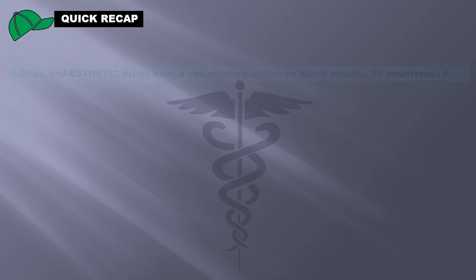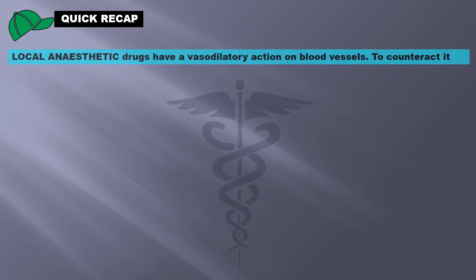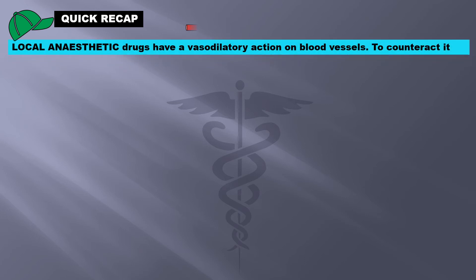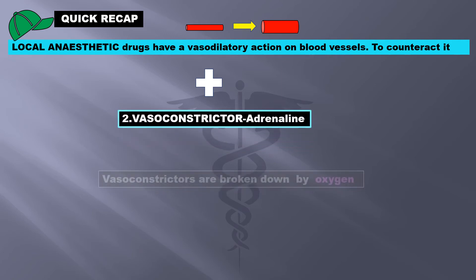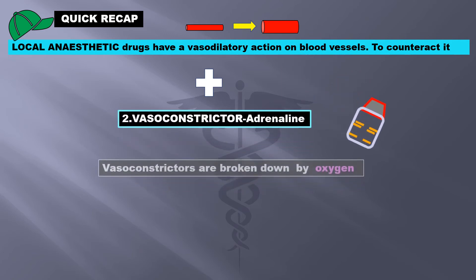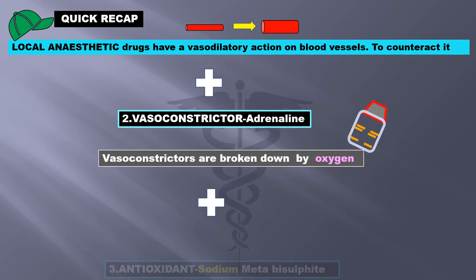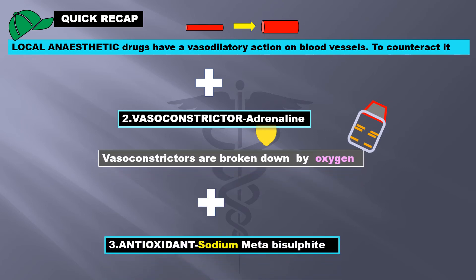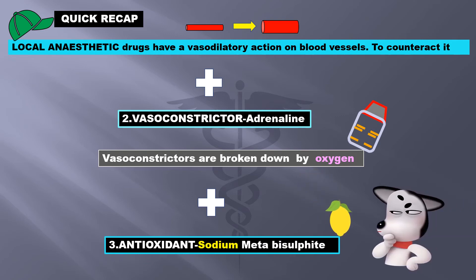A quick recap: local anesthetic drugs have a vasodilatory effect on blood vessels. To counteract it, we add a vasoconstrictor — adrenaline — but it gets broken down by oxygen. To remove oxygen, we add the antioxidant sodium metabisulfite, but it makes the solution acidic.